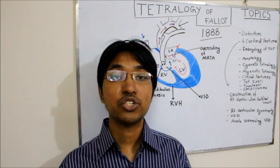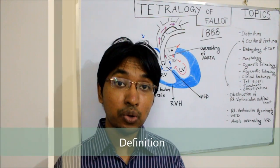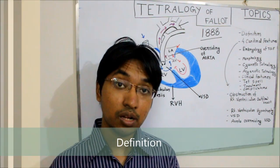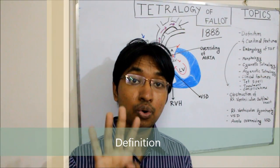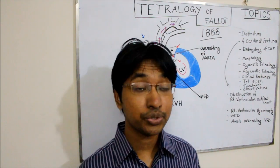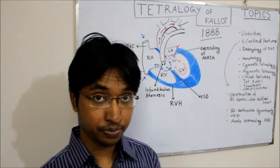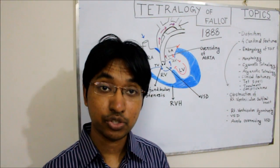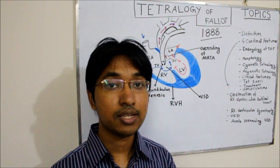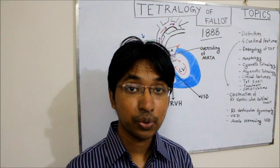First question: what is Tetralogy of Fallot? Tetralogy of Fallot is a congenital cyanotic heart disease that classically involves four anomalies of the heart. Those four abnormalities include right ventricular outflow tract obstruction, right ventricular hypertrophy, ventricular septal defect (also known as VSD), and aorta overriding the ventricular septal defect.